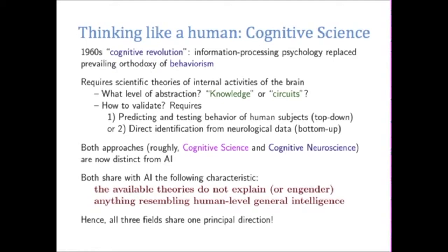One of the major threads in artificial intelligence has been cognitive modeling, and this approach includes the famous work of Newell and Simon, discussed in the text. In the 1960s, there was a cognitive revolution in psychology in which information processing replaced behaviorism — the psychology of B.F. Skinner. This more sophisticated theory went beyond reflex, and as we've seen in the course, there are real limitations of reflex agents.